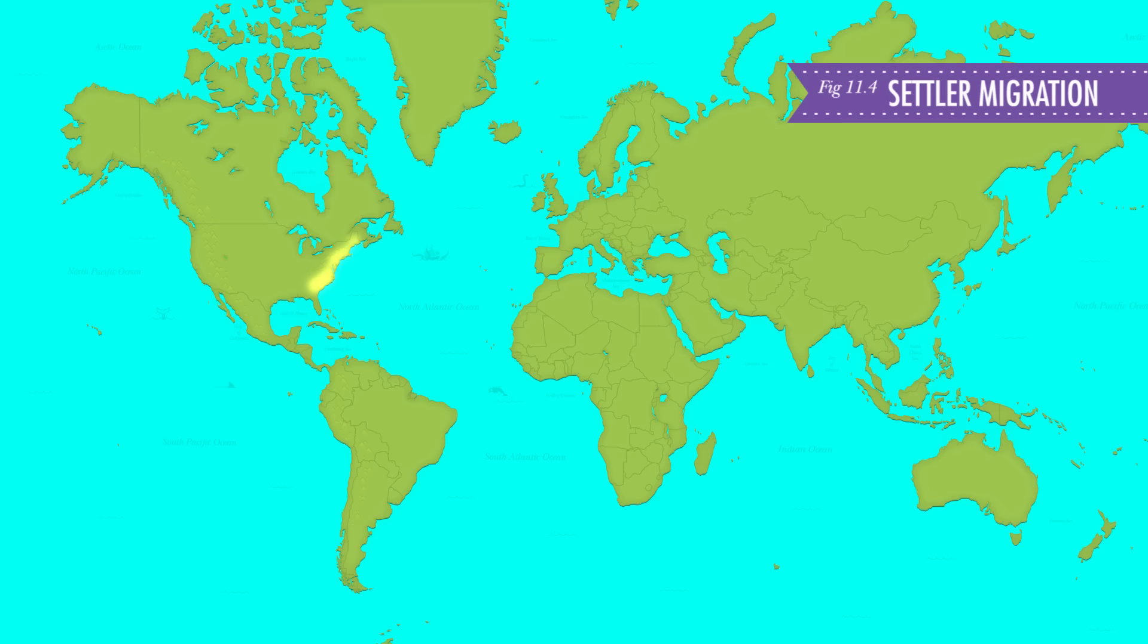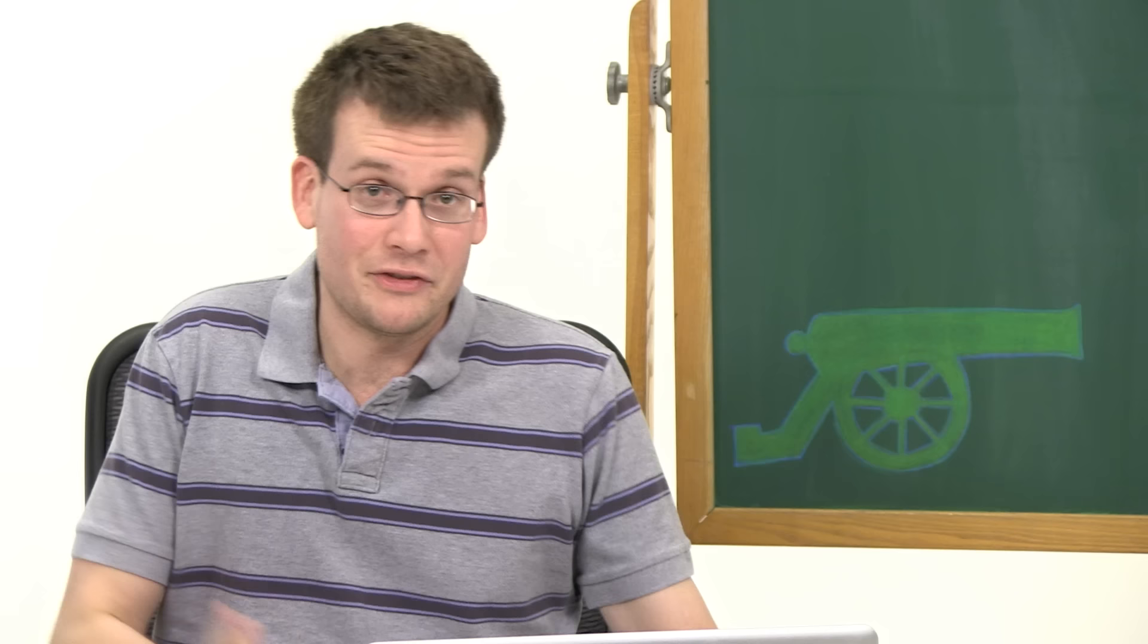So it shouldn't come as a surprise that Americans were continuing to push westward into territory where Indians were living. I mean, this was a big reason for the Louisiana Purchase, after all. By the beginning of the war, more than 400,000 settlers had moved into territories west of the original 13 colonies, and they outnumbered American Indians by a significant margin. Some Native groups responded with a measure of assimilation.